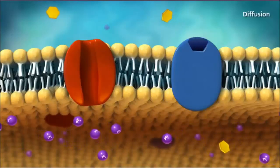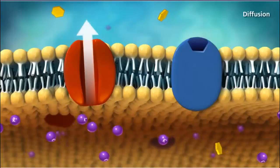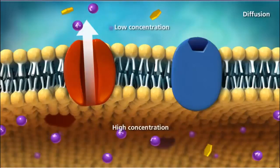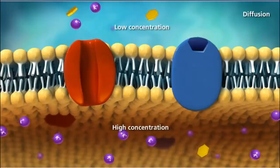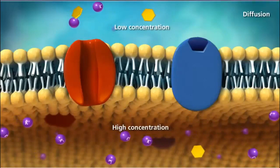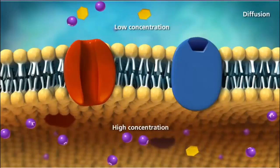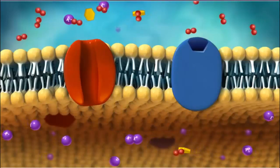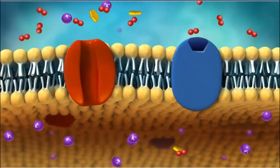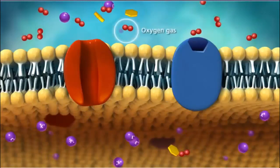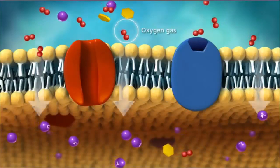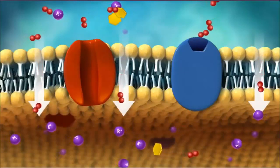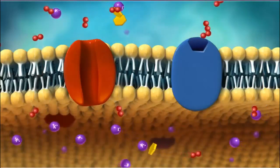Diffusion is a process in which substances move across a membrane from an area of high concentration to an area of lower concentration, or between areas of opposite electrical charges. This is called the electrochemical gradient. Small, non-charged particles, primarily gases such as oxygen and carbon dioxide, can diffuse through the plasma membrane by moving in between the phospholipids in the bilayer.